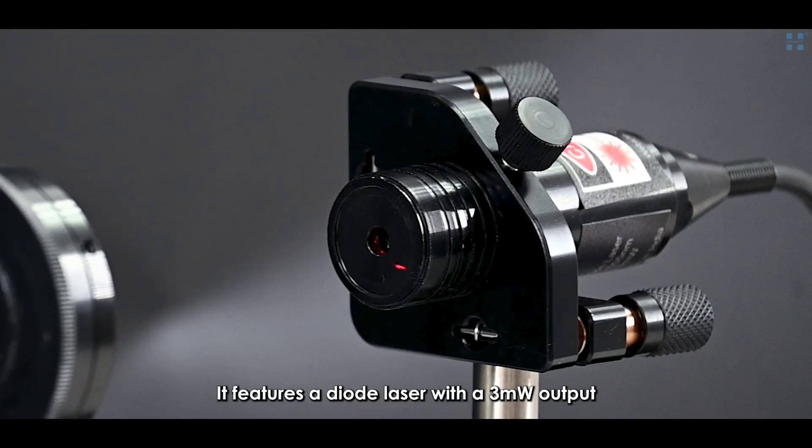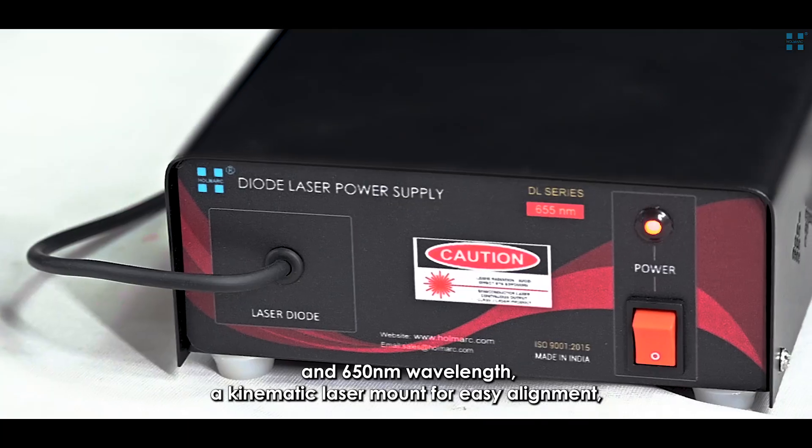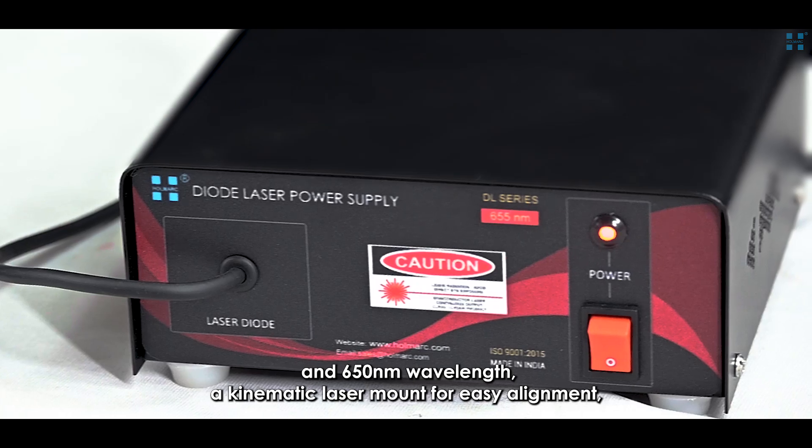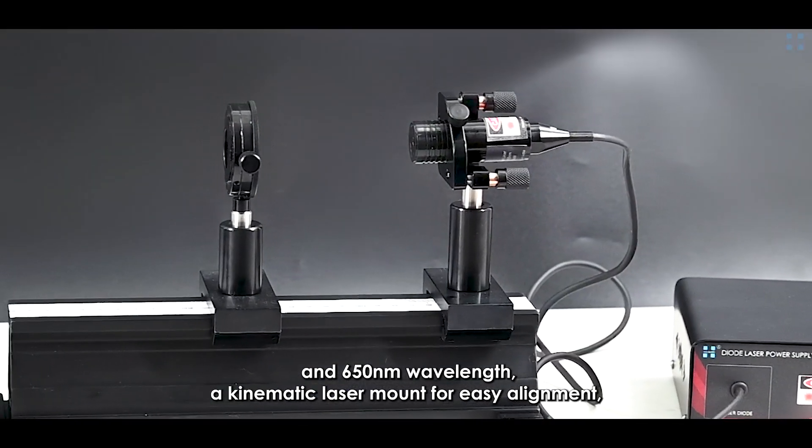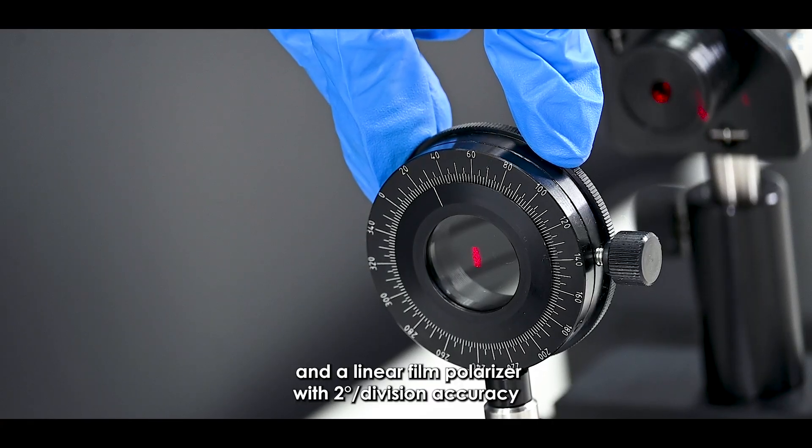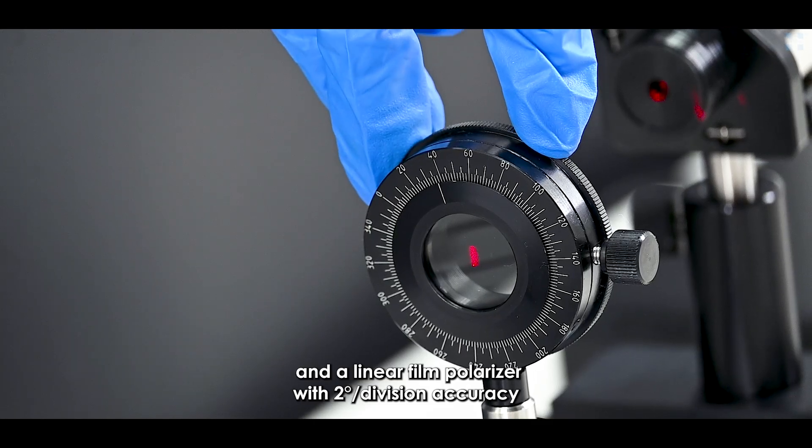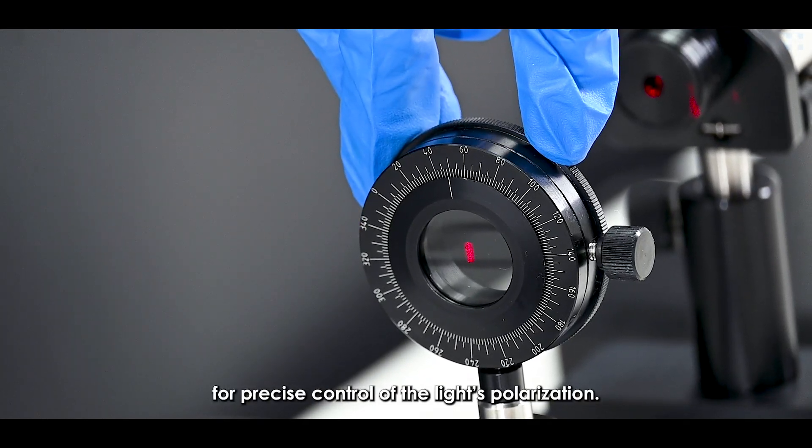It features a diode laser with a 3 mW output and a 650 nm wavelength, a kinematic laser mount for easy alignment, and a linear film polarizer with 2 degrees per division accuracy for precise control of the light's polarization.